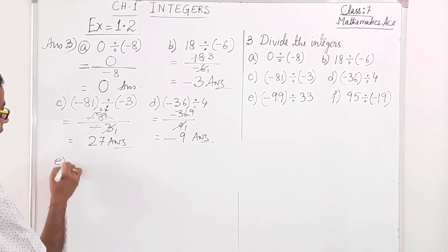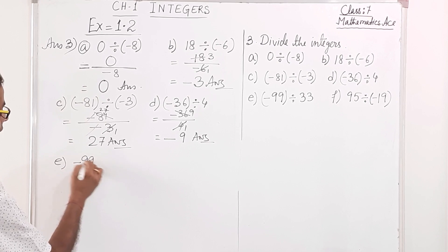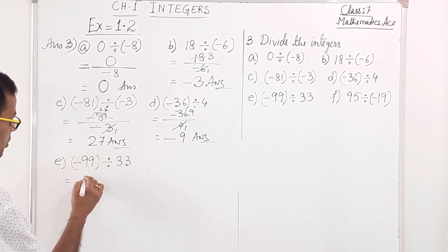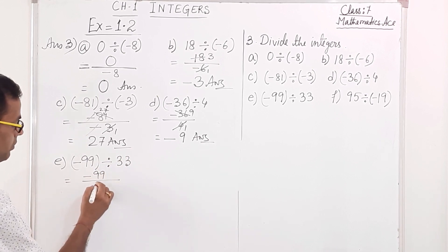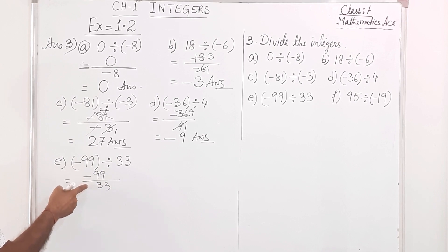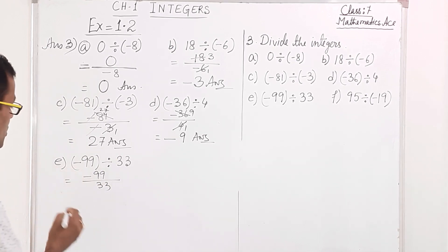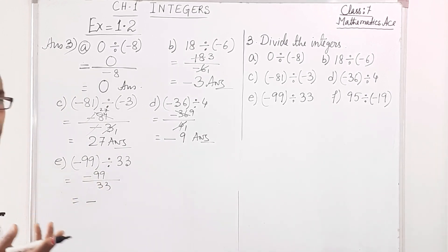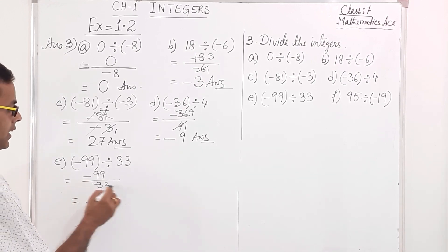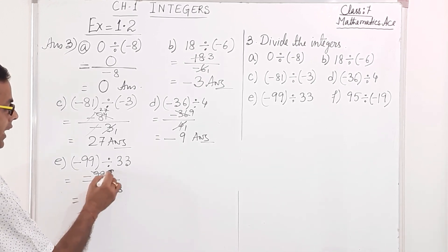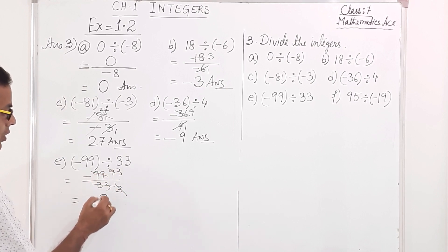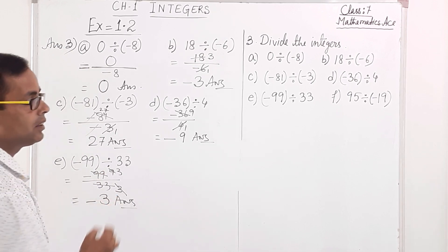Number E: minus 99 divided by 33. Writing it as minus 99 over 33 — minus and plus, different sign — so the answer will be negative. 99 divided by 33: using the 11 table, 11 nines are 99, so 33 threes are 99. The answer is minus 3.